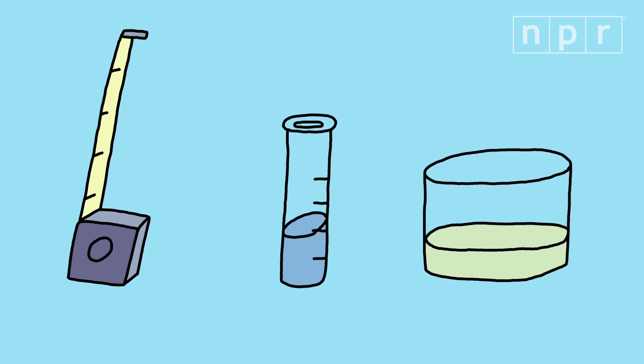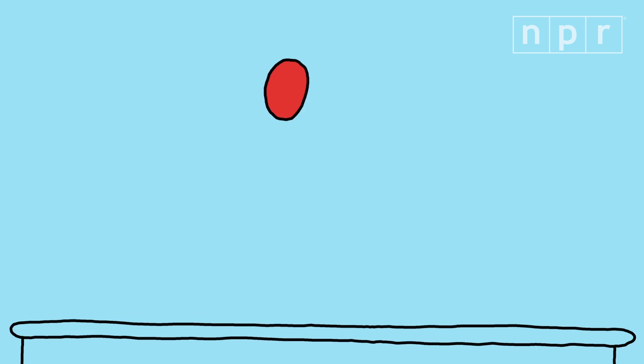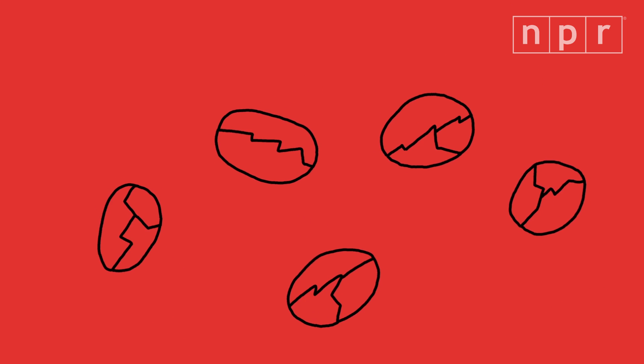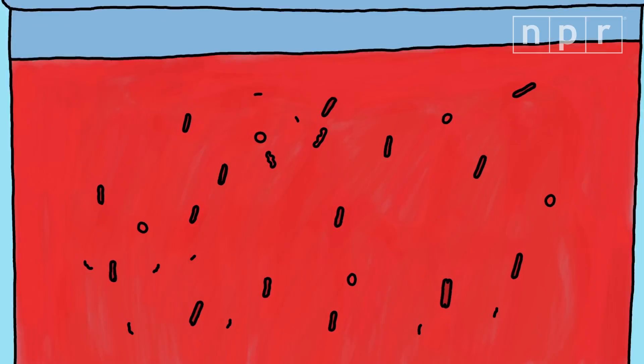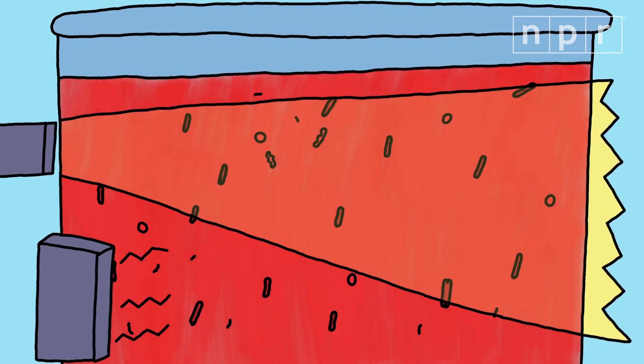We're still testing things out, but we think our final device will work something like this. You take a few drops of blood and add them to a tube with some soap in it. The soap bursts open the red blood cells. Then shine a laser on it and measure how much light passes through. Then make the exact same measurement, but this time hold a magnet next to the blood sample.